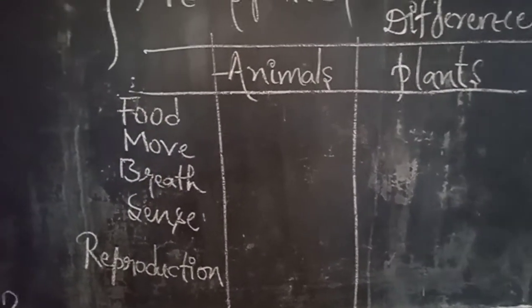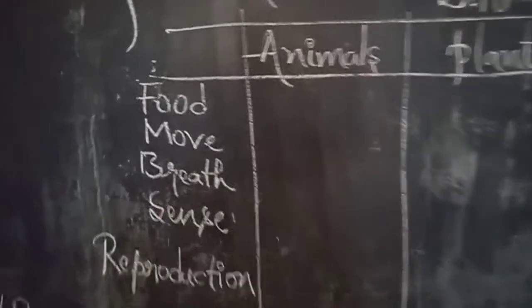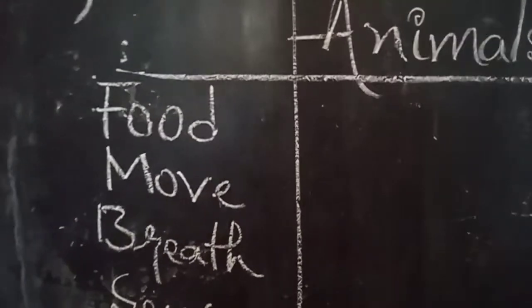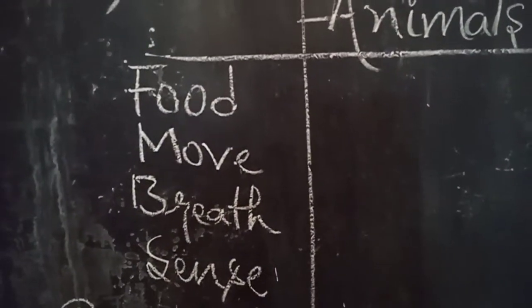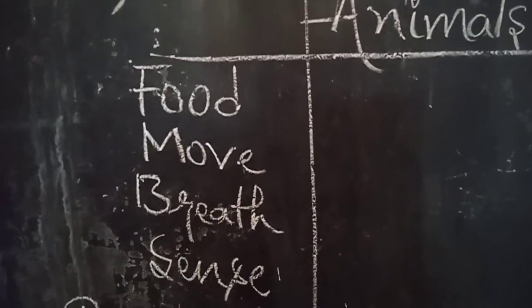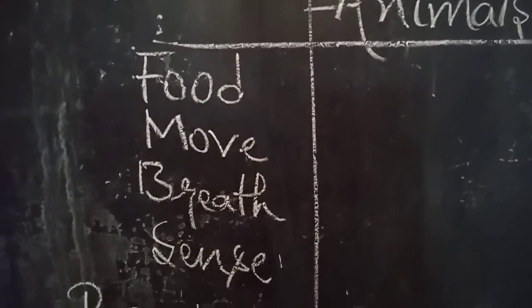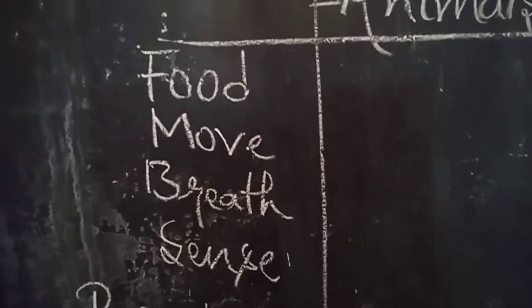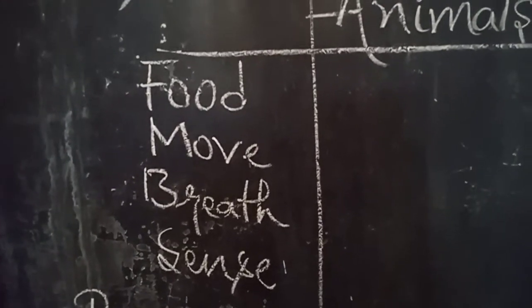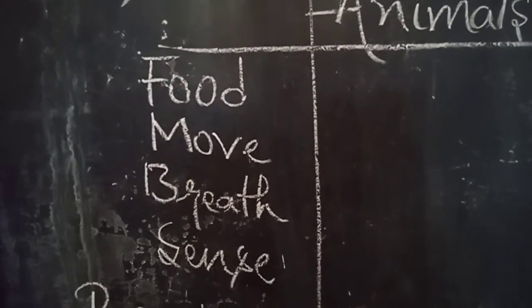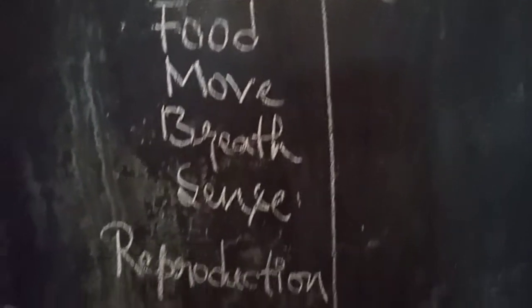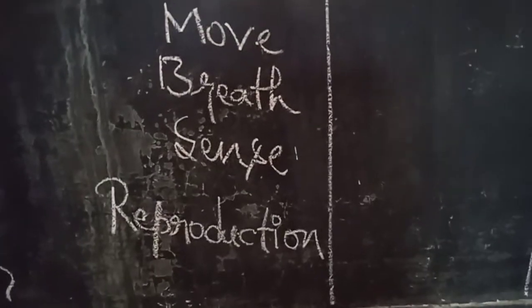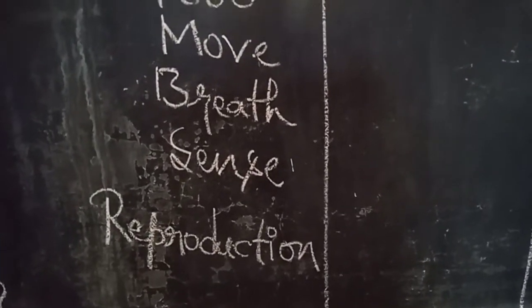We will compare plants and animals using five factors. The first point is food. Next is movement. Next is breathe. Next is sense. The last thing is reproduction.